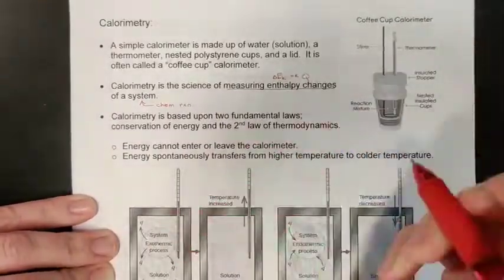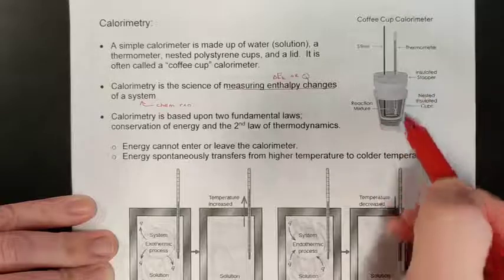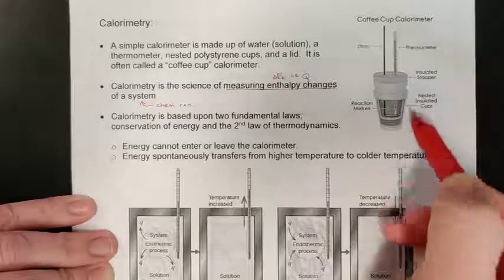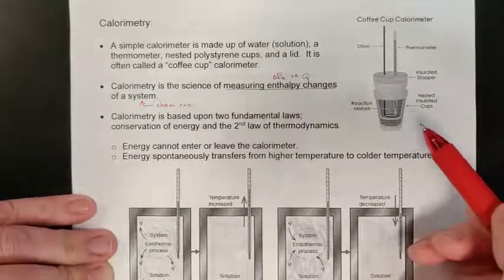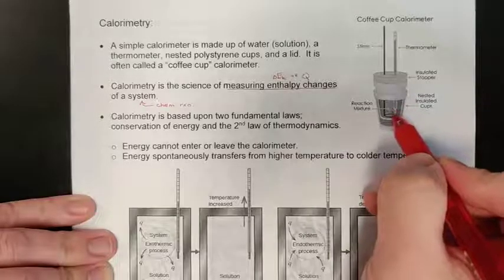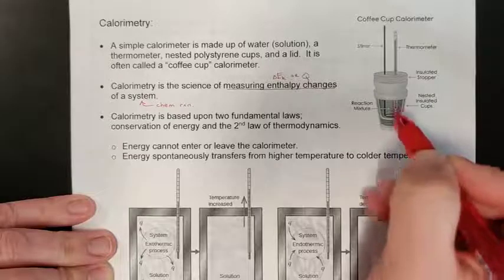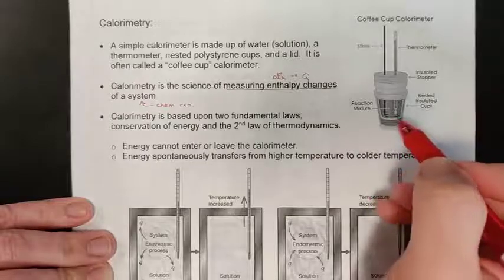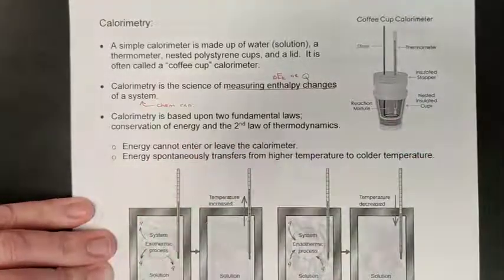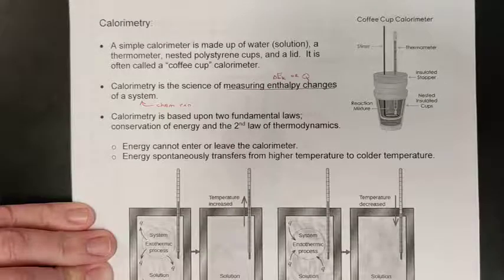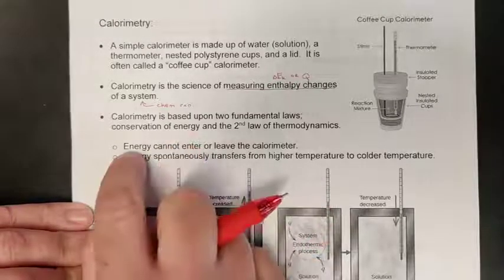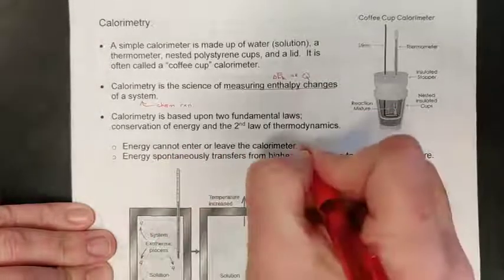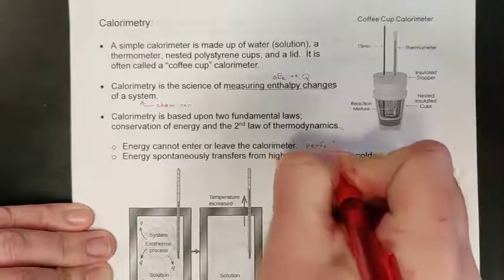Looking at the design, we have our nested cups there to isolate whatever you're studying on the inside from the outside, and to insulate it so that we don't have any thermal energy changes leaving the calorimeter or getting in. We only want to know the energy change between what's called the system and the surroundings. This is based upon two laws of thermodynamics — energy can't be created or destroyed — so we assume the calorimeter is a perfect thermos.